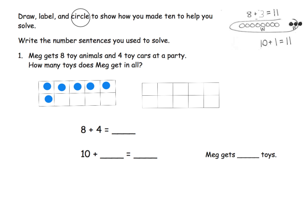So we have 8 toy animals: one, two, three, four, five, six, seven, eight. Remember teachers, we want students to fill out the whole row before moving to the next one. And then we have four toy cars: one, two, three, four. So now we have the problem modeled — we've got eight toy animals and four toy cars.